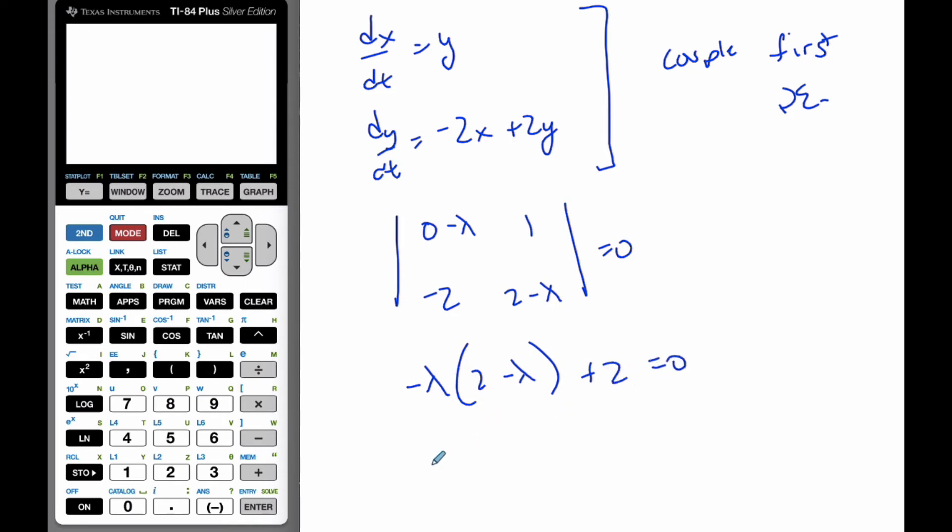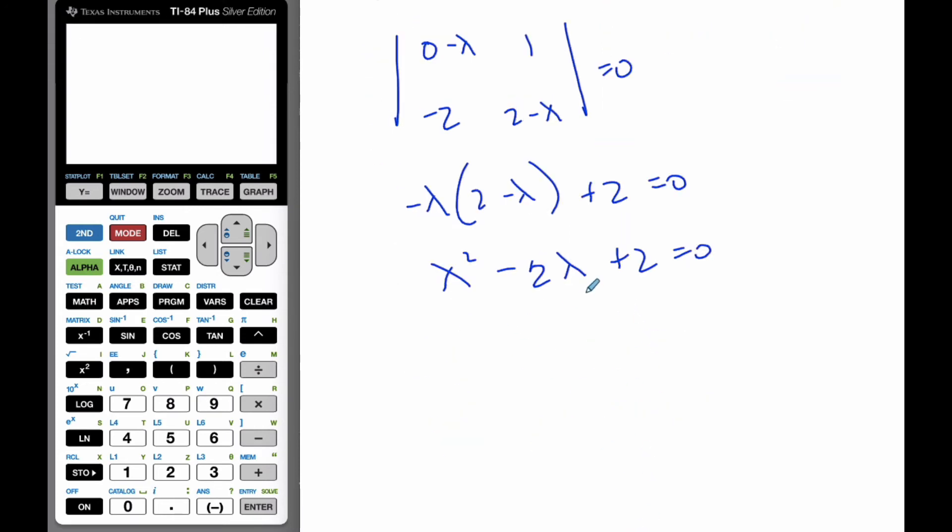So then, we multiply negative lambda times 2 minus lambda minus negative 2, 0. And so I get lambda squared, positive, minus 2 lambda, and I multiplied it backwards, plus 2 is 0. And now I need to solve this quadratic equation. It's not going to solve easily.